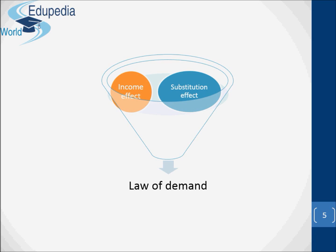The second reason: the good will now cost more than alternative or substitute goods, and people will switch to these. This is called the substitution effect of a price rise. Similarly, when the price of a good falls, the quantity demanded will rise — people can afford to buy more (income effect), and they will switch away from consuming alternative goods (substitution effect). Returning to our coffee example, we will not be able to afford as much as before, and we will probably drink more tea, fruit juices, or even water instead.